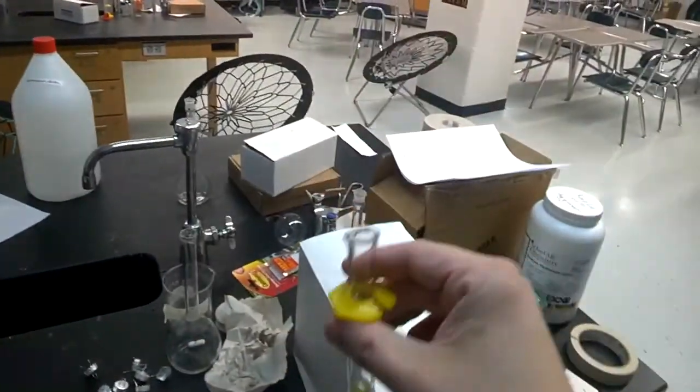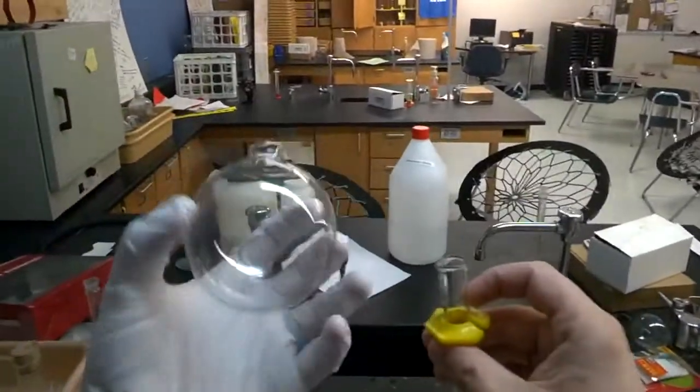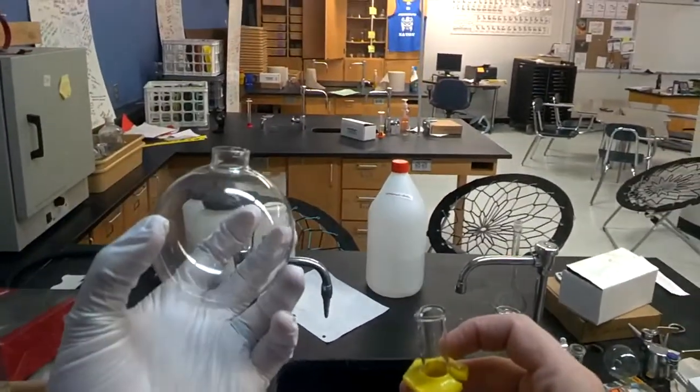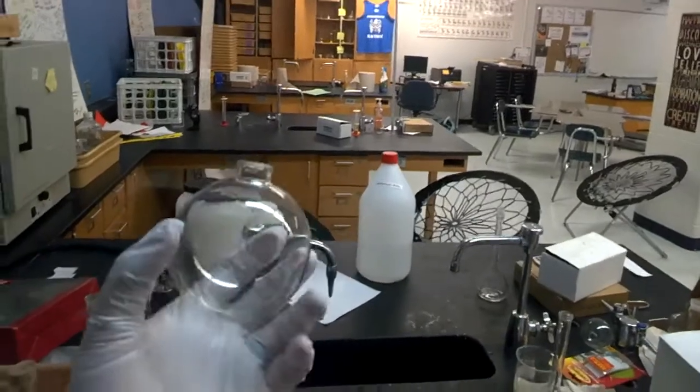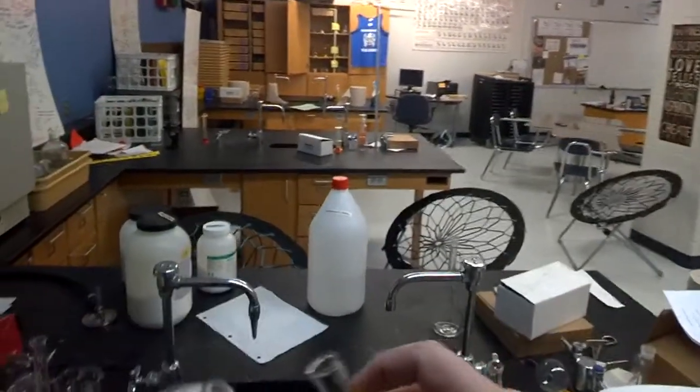Now what we need to do is we need to take our five percent dextrose solution and I'm going to add it to this glass ornament which I have rinsed with both distilled water and acetone to make sure there's nothing inside.